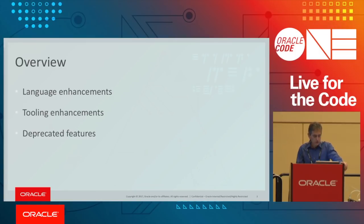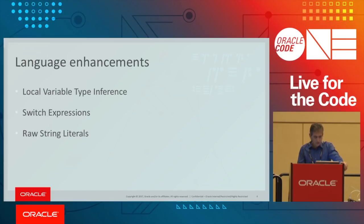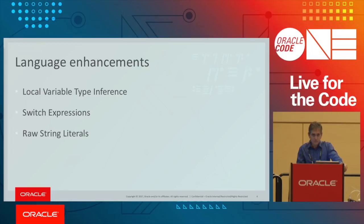The overview: we're going to talk about three language enhancements we've been introducing in the last releases, some tooling enhancements, and a quick note on deprecated and removed features. Starting with the language enhancements — three features: local variable type inference introduced in JDK 10, and switch expressions and raw string literals introduced as preview features in JDK 12.